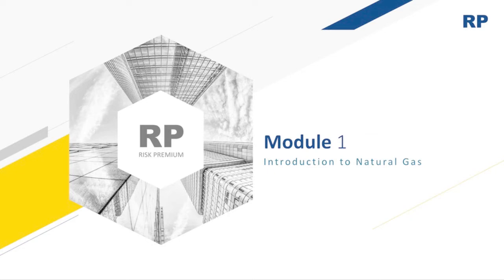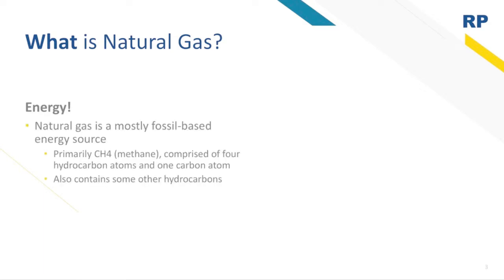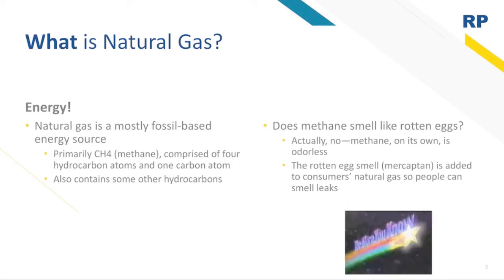The simple answer to the question of what is natural gas is energy. It's a mostly fossil-based energy source, primarily methane, also known as CH4, which is comprised of four hydrogen atoms and one carbon atom. You may know natural gas because of the rotten egg smell when you leave the stove on without igniting the flame. Fun fact: methane itself is odorless, but a smelly, harmless chemical called mercaptan is added to natural gas to help us identify when there's a leak.